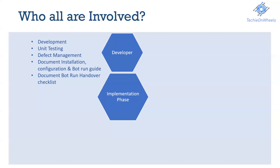There is another document called the bot run handover checklist. This is a kind of checklist covering what needs to be done as a prerequisite or configuration — whether your bot is going to run in attended mode or unattended mode — to ensure the bot run happens as expected. All these things need to be documented carefully.